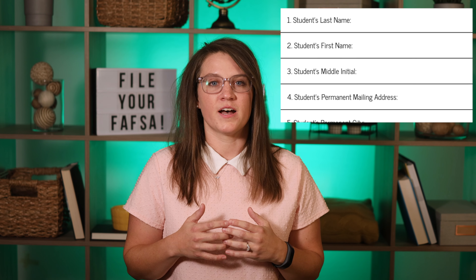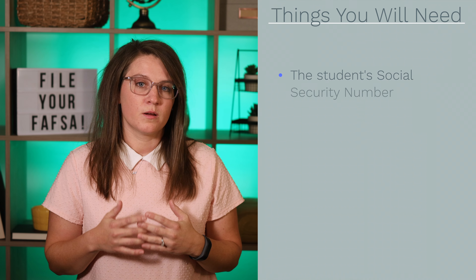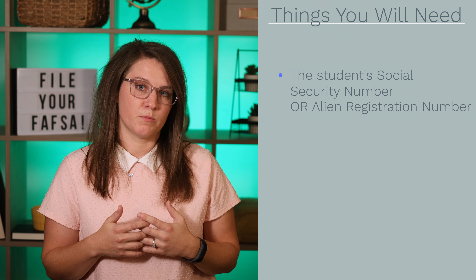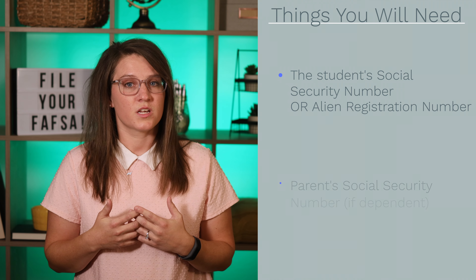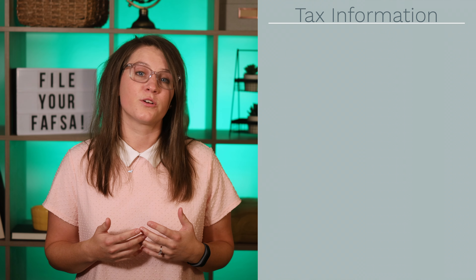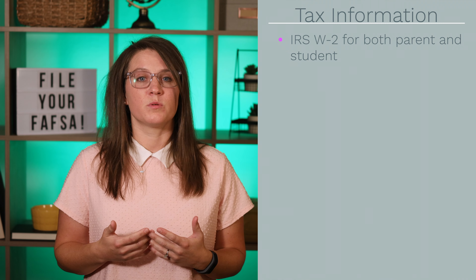The questions on the FAFSA ask for information about you, like your name, date of birth, address, and all your information about your financial situation. Here is a list of helpful information you may want to gather before starting your application. You'll need your social security number or alien registration number. If you're a dependent student, you'll also need your parent's social security number if it applies. Federal tax information or tax returns, including IRS W-2 information for you and your parents, will be needed to complete the application.